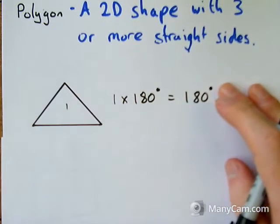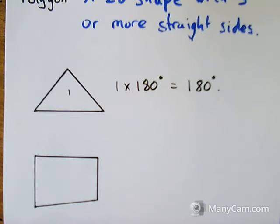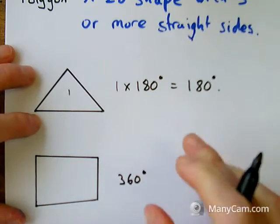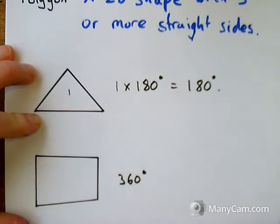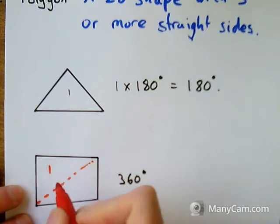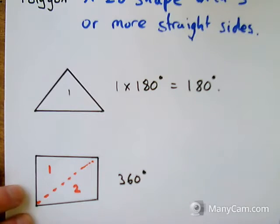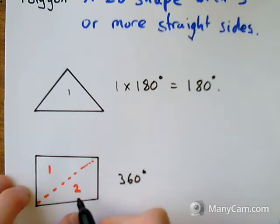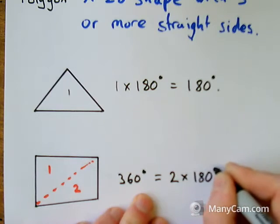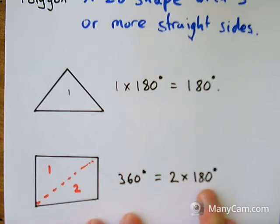If I move to look at a quadrilateral, a four-sided shape, you probably already know that the angles add to 360 degrees. But if I show you how, using angles in a triangle — I'm going to split this shape up into triangles because we know how many angles there are in a triangle. I've got one triangle and two triangles. For each triangle there's 180 degrees and I've got two of them, so two lots of 180 degrees gives me 360.